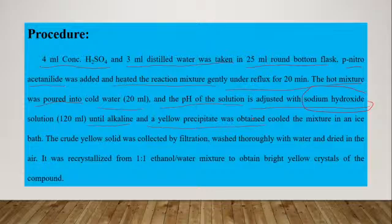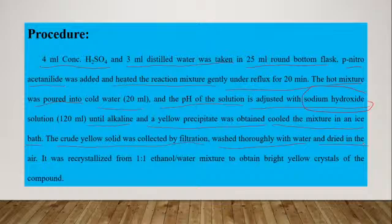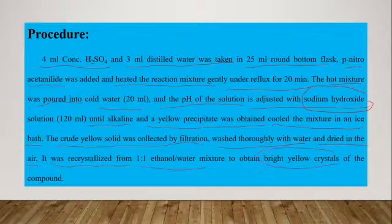We will cool the mixture in an ice bath. Crude yellow solid was collected by filtration, thoroughly washed with water, and dried in air. It was recrystallized by using ethanol-water mixture to obtain bright yellow crystals of the compound, that is para-nitroaniline.